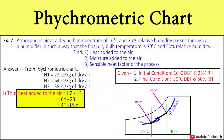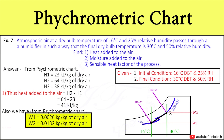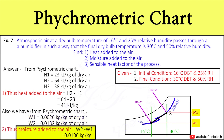Next, we want to find out moisture added to the air, that is W2 minus W1. The values of W1 and W2 we get from the psychrometric chart. Putting the values into the equation, we get moisture added to the air as 0.0106 kg per kg of dry air.